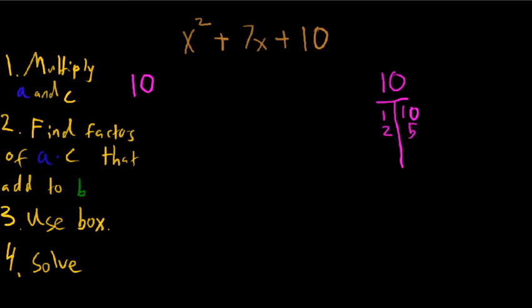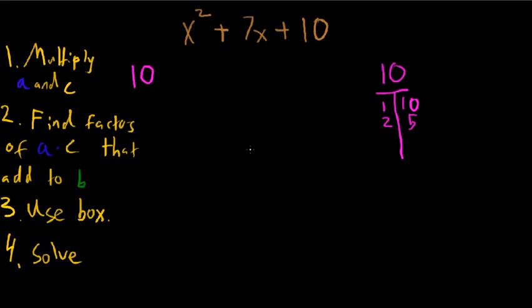Sometimes you'll get a whole huge list of factors, but it's better than not having very many factors because it's more likely to be not factorable when you don't have very many factors. But anyway, we look at these factors that add to b. So 1 and 10 adds to 11, 2 and 5 adds to 7, so there we go. b is 7, so we've found our factors.